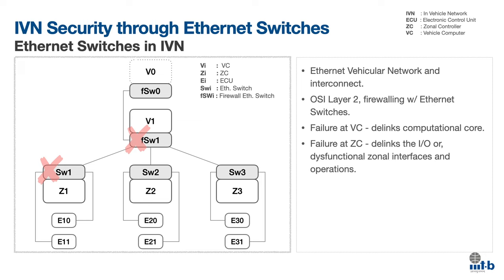Here is a depiction of a portion of the IVN centered around the high-speed Ethernet backbone. V0 and V1 depict the vehicle computers (VCs). Z1, Z2, Z3 depict zonal controllers (ZCs). E10, E20, E30 depict attached ECUs. SW1, SW2, SW3 are the Ethernet switches. F-SW0 and F-SW1 are the firewall Ethernet switches — for simplicity, these can be considered as Ethernet switches for now. The depiction is an Ethernet vehicular network showing a portion of the IVN, also highlighting the capacities of the Ethernet switches to act as an OSI layer 2 firewall in the network.